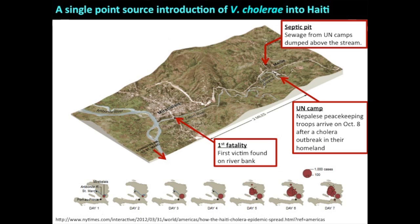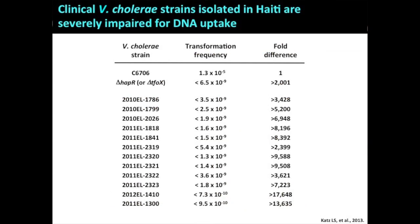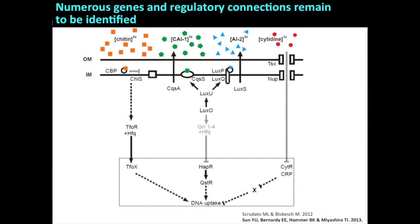They got us involved because they asked if we could test whether those strains actually can take up DNA, since we study horizontal gene transfer. Here's our strain that we use in the lab all the time, with its transformation frequency set to one. You know our controls — if you delete either TfoX or HapR, you get no transformants, impaired by at least a thousand fold. Every single isolate from Haiti is impaired for DNA uptake. Not only did they not take up DNA — it looks like they couldn't. Our interest is to use those Haiti strains to identify novel features or factors in our pathway, because Lee Katz told me that all the components we know about are 100% conserved. So those strains from Haiti have one or more mutations or SNPs that prevent them from taking up DNA.